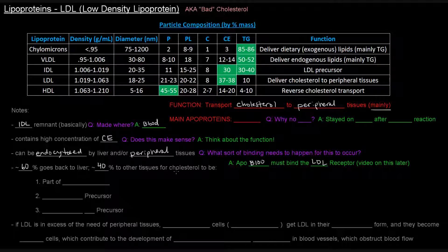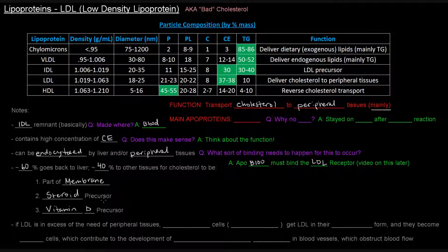So, when the cholesterol is taken up by these other tissues, the cholesterol can be used as part of the membrane for that cell or for the cells of that tissue. It can be used as a steroid precursor, it can be used as a vitamin D precursor, all things that we've discussed previously.